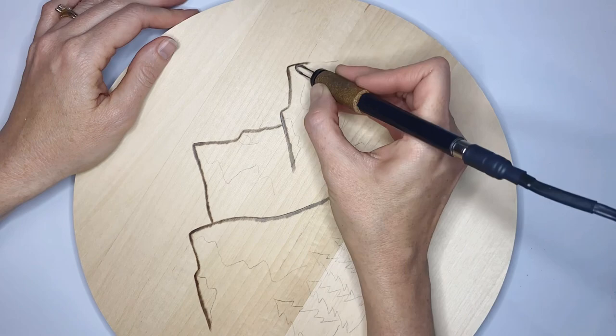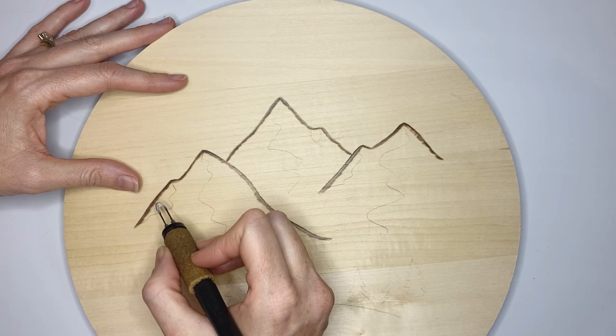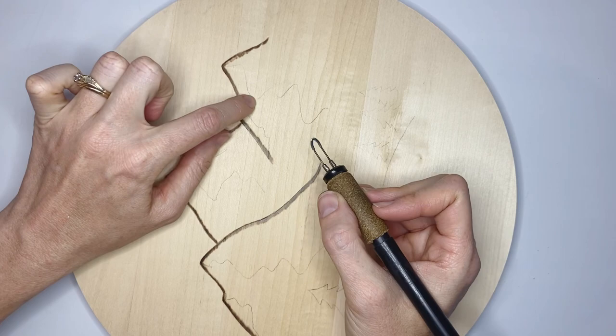We're going to block in the shadowed parts of the mountain and all we're going to do is turn this so that the sharp edge of the nib is going to be against the middle of the mountain and we're going to do that with all of the shadowed parts.